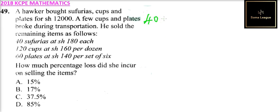She sold 40 sufurias at 180. So if you multiply like that, you'll be able to get that is 7,200.